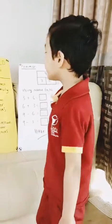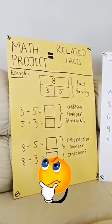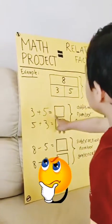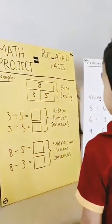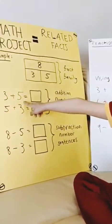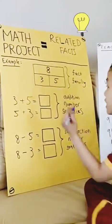Now let's solve the answer over here for the Related Facts with 3, 5, and 8. What is 3 plus 5 equals? 8. Look at the answer.